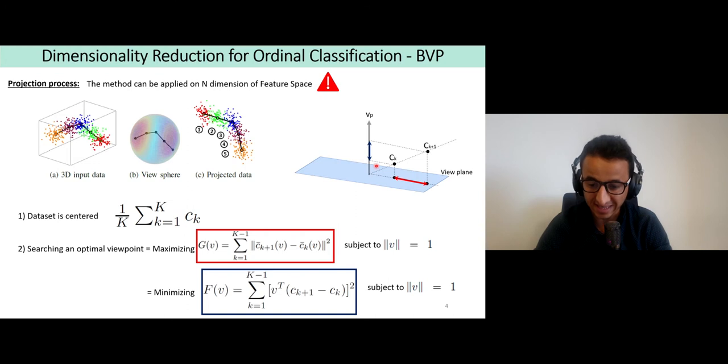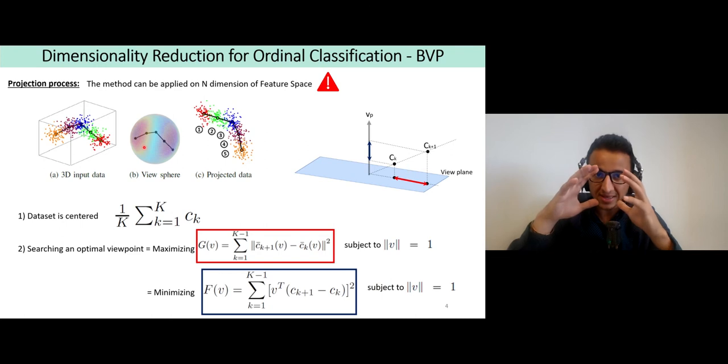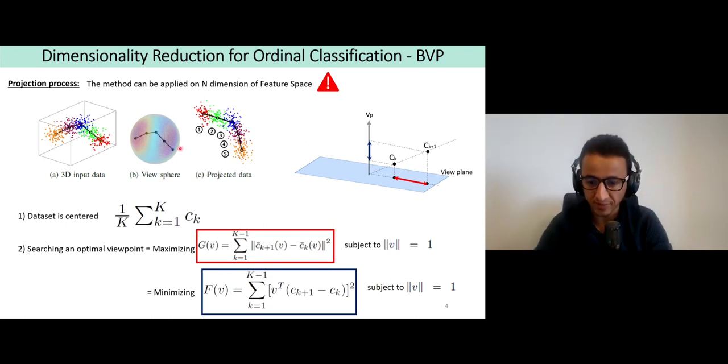If we look at this schema, maximizing the distances between adjacent classes in this projection plane refers to minimizing this function subject to norm one, because we are looking for viewpoints that only exist on the surface of the view sphere.